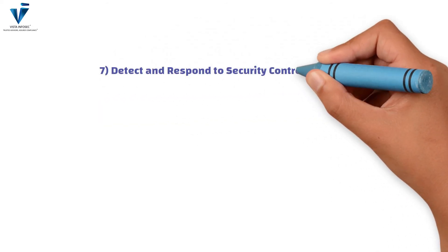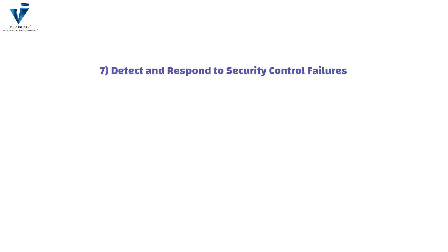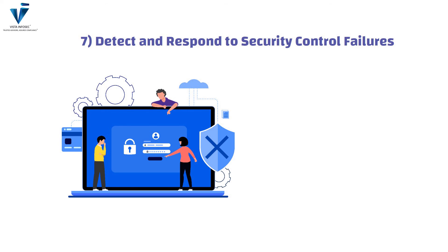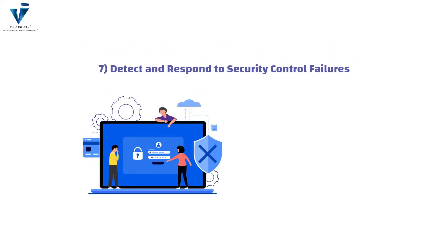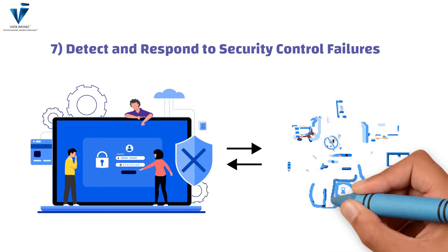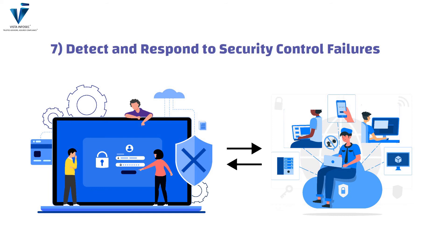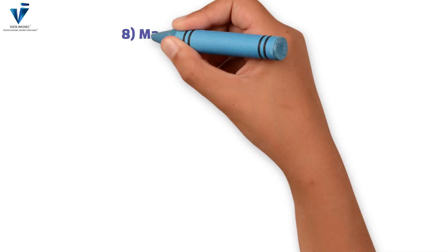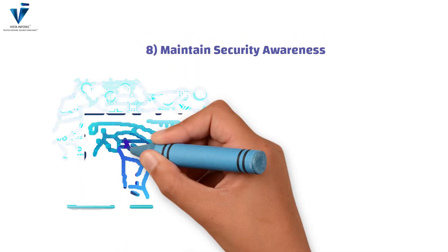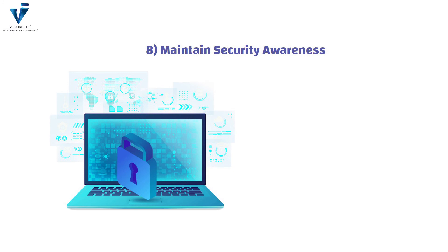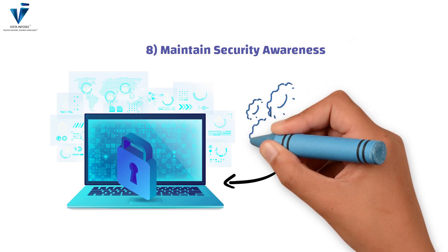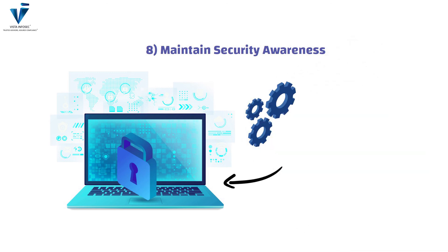Organizations must also detect and respond to security control failures. This is critical, as organizations need to be able to detect failures in security controls during control reviews. It is imperative that organizations have processes for responding to such failures in a timely manner, and those processes should be periodically tested. Additionally, maintaining security awareness is important — data breaches are not limited to exploitation of technical vulnerabilities but also involve the use of various social engineering techniques.